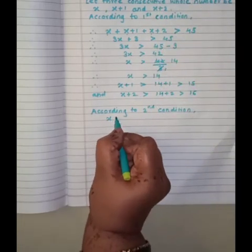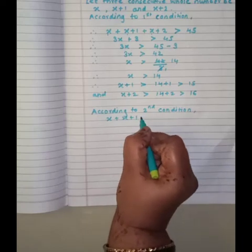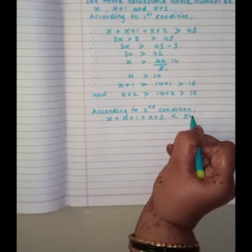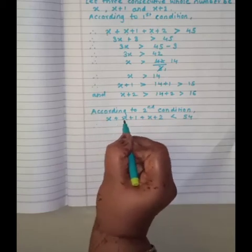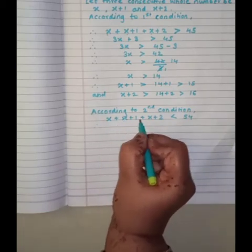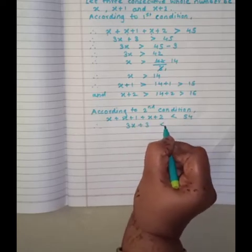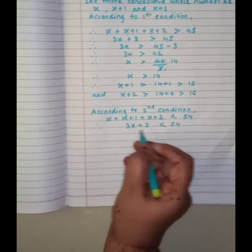Sum is less than 54. So X, X plus 1, X plus 2 is less than 54. Therefore, X plus X is 2X plus X is 3X. 3X plus 3 is less than 54.